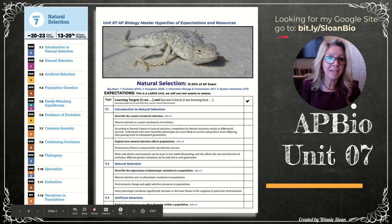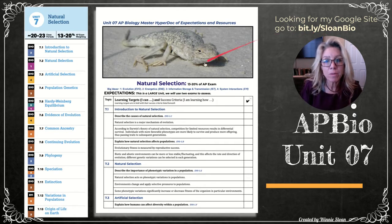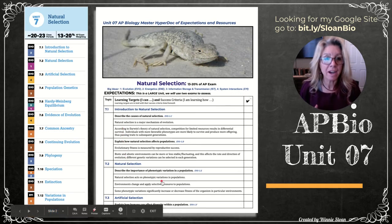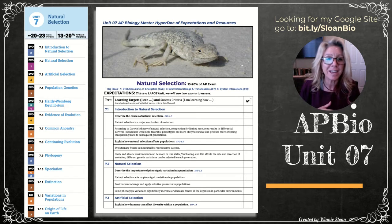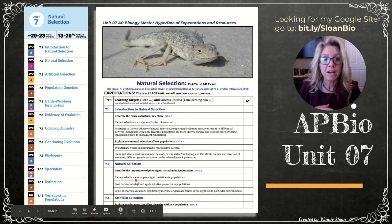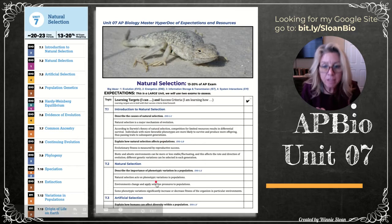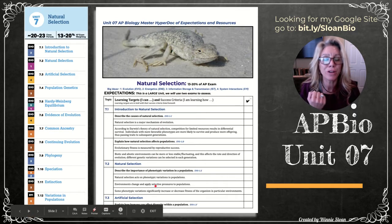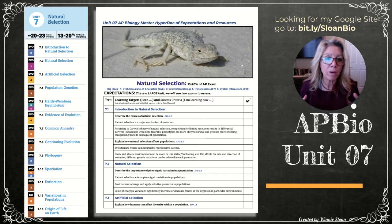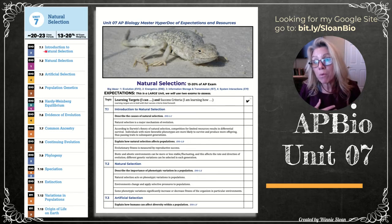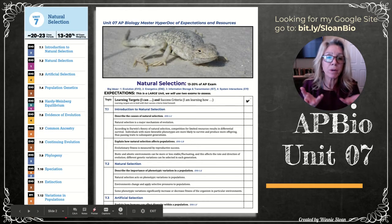If you want to find my site, this Bitly link will take you there. I provide unit guides with topics from the College Board, plus helps, reviews, connections, links to Bozeman's, quizzes, and Khan Academy. Natural selection is one of the largest units — 13 to 20 percent of your exam questions will come from it, covering roughly 20 to 23 class periods. We'll have topics 7.1 through 7.13, broken into two assessments.